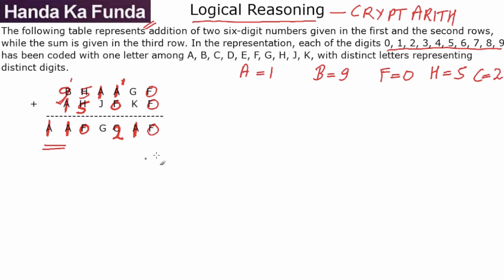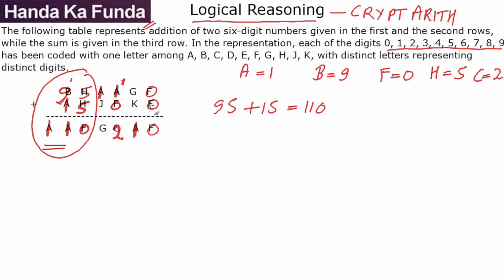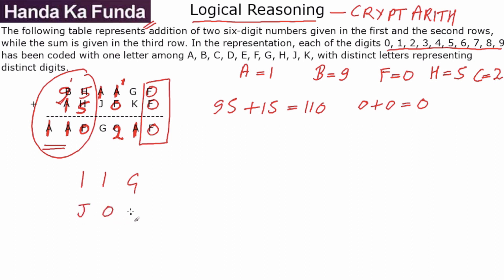I have figured out a lot of things. The left part: 95 plus 15 is giving me 110. The last digit: 0 plus 0 gives 0. The part still containing variables is 11G plus J0K giving me G21. The values I still don't know are G, J and K. I know that G plus K should generate a carryover of 1. The digits used so far are: 0 for F, 1 for A, 2 for C, 5 for H, and 9 for B.